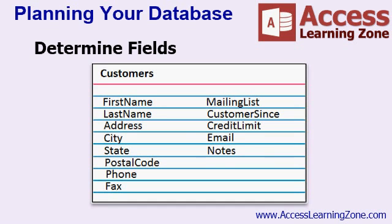Address, city, state, postal code or zip code. Phone number, fax number. And then some other types of data: Is this customer on my mailing list? How long have they been a customer — the customer since field. What's their credit limit? Email address. And finally, some notes.